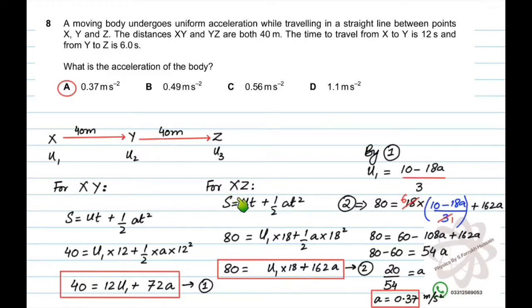Similarly, if you solve it from X to Z, s equals ut plus half at squared. The distance is 80. The initial velocity is similar because we are solving from X to Z, so at X its velocity is u1. When you simplify it, it becomes 80 equals u1 times 18 plus 162a.